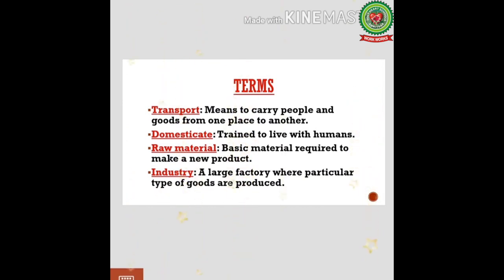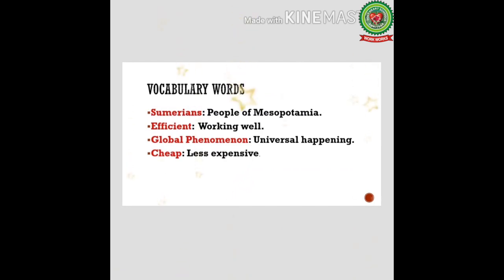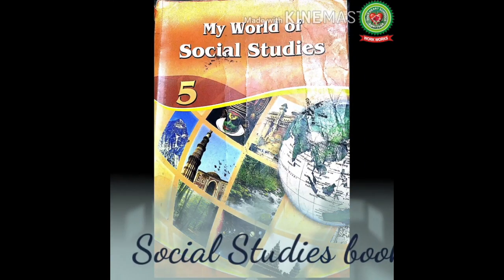The third term is raw material, which means basic material required to make a new product. For example, to make sugar we need sugarcane as a raw material. The last term is industry, which means a large factory where a particular type of goods are produced — for example, cottage industry. Now let us discuss a few difficult words: Sumerians are people of Mesopotamia; efficient means working well; global phenomenon means universal happening; cheap means less expensive.